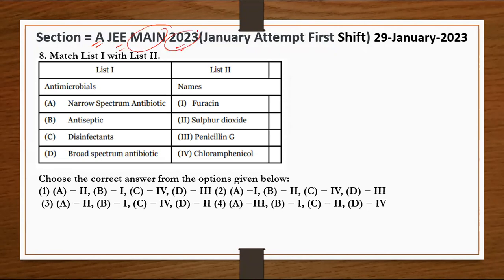Section A, JEE MAINS 2023 January attempt first shift, 29 January 2023 paper, question number 8. Match list one with list two. List one and list two are given here. Antimicrobials and their names are given.